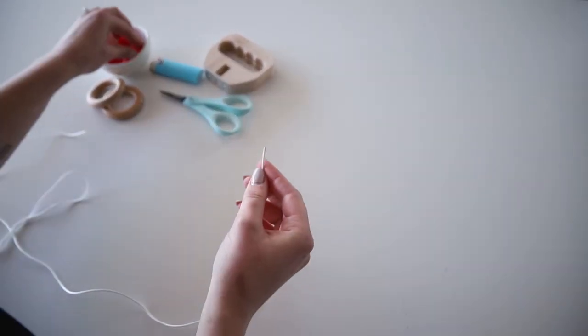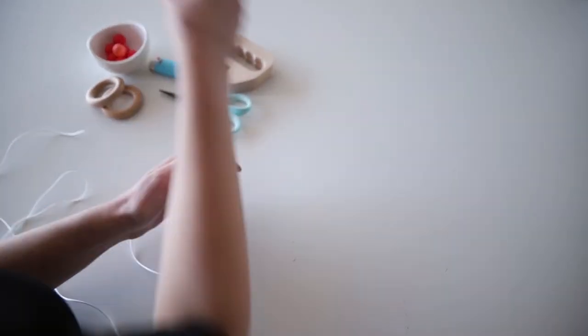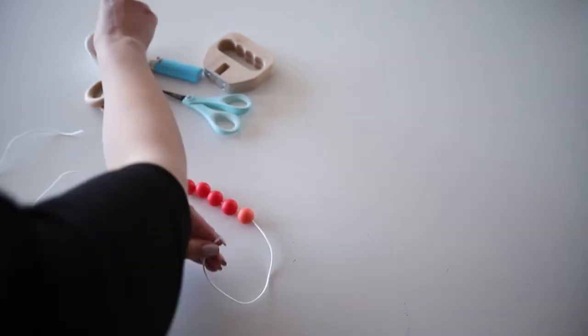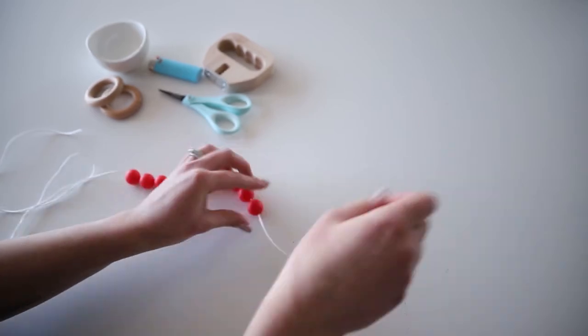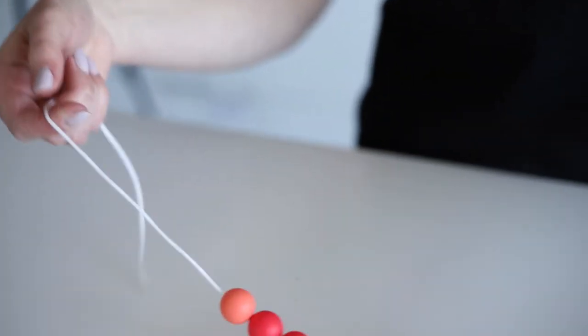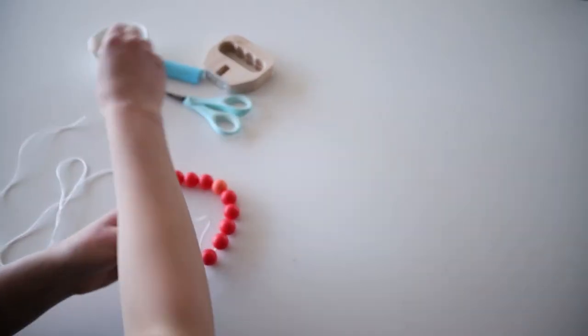Next begin stringing your beads in the preferred order of color. Once all the beads are strung slide the wood rings onto the beaded cord.